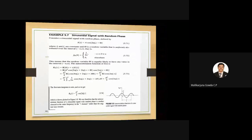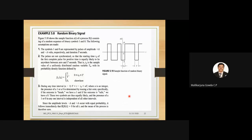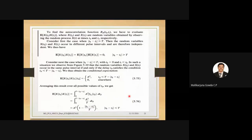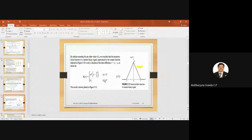Similarly, for a binary signal — which is predominantly used in digital communication — the autocorrelation function is a triangular function. The autocorrelation function of a binary signal having magnitude +1 and −1 is a triangular signal lying over the interval from −T to +T.